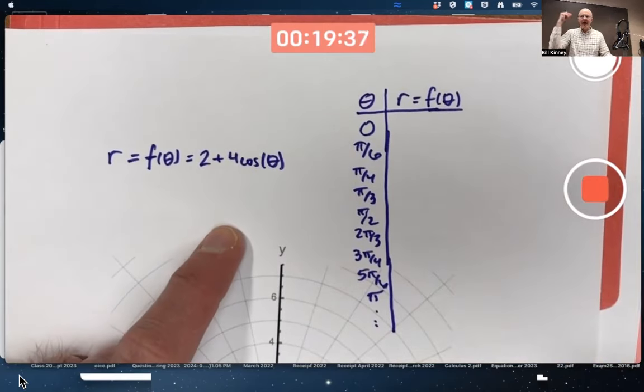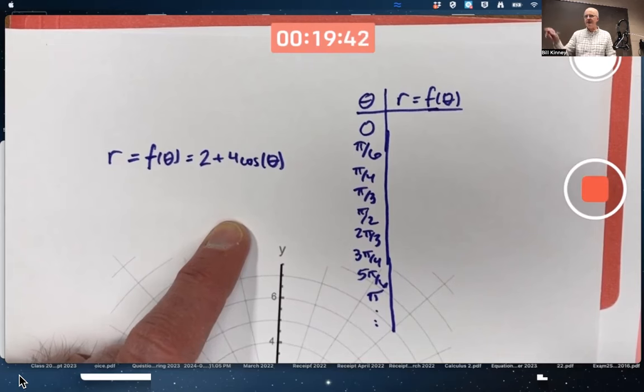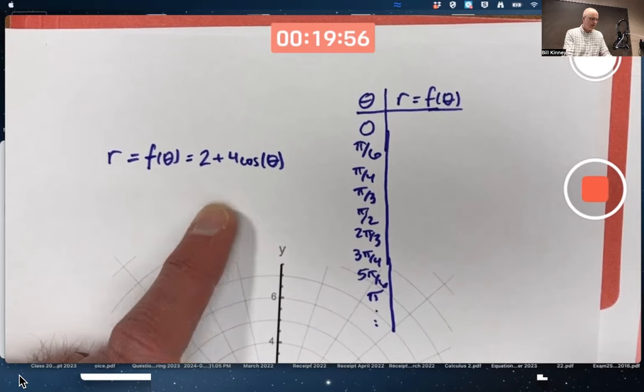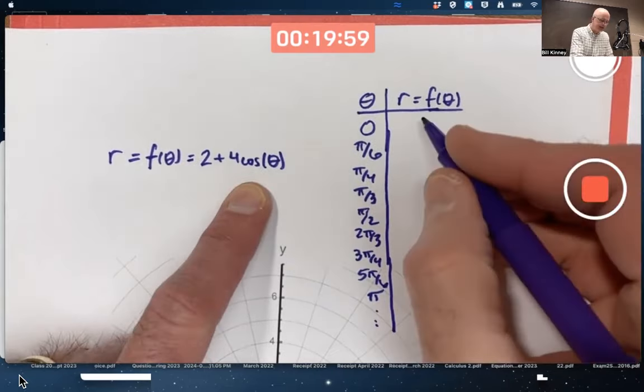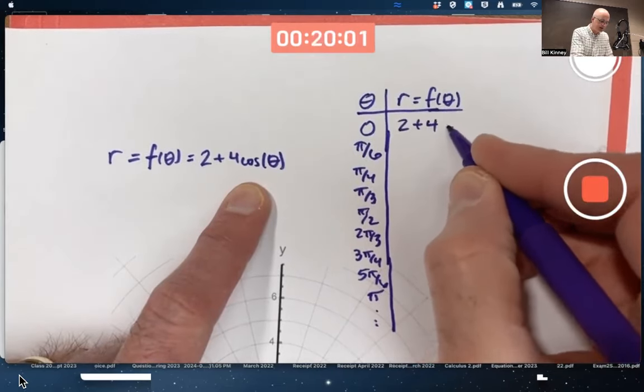Think with me here. Cosine of 0, you should know that like that. It's 1. Cosine of 0 is 1. If you're thinking about the unit circle definition of cosine and sine, you start at the point 1, 0. The cosine of an angle of 0 is the first coordinate of that point, which is 1. It's the rightmost point in the unit circle. 2 plus 4 times 1, 6. I'll write it as 2 plus 4 equals 6.